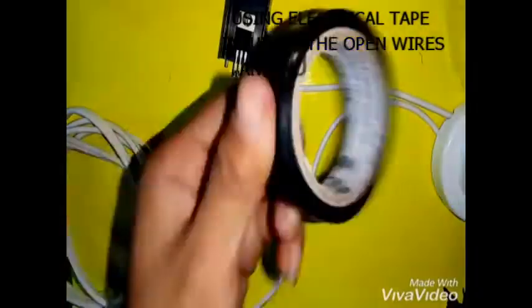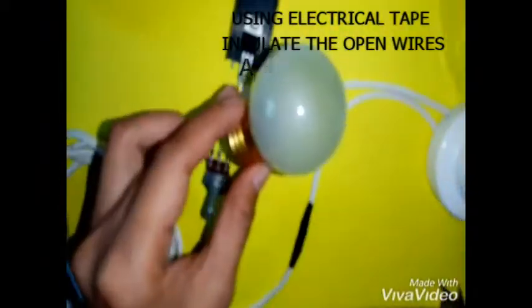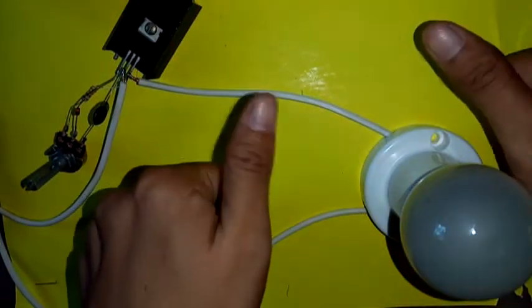Using electrical tape, insulate the open wires and put the bulb in the receptacle. Now, let's check if it works. Ta-da! It works!